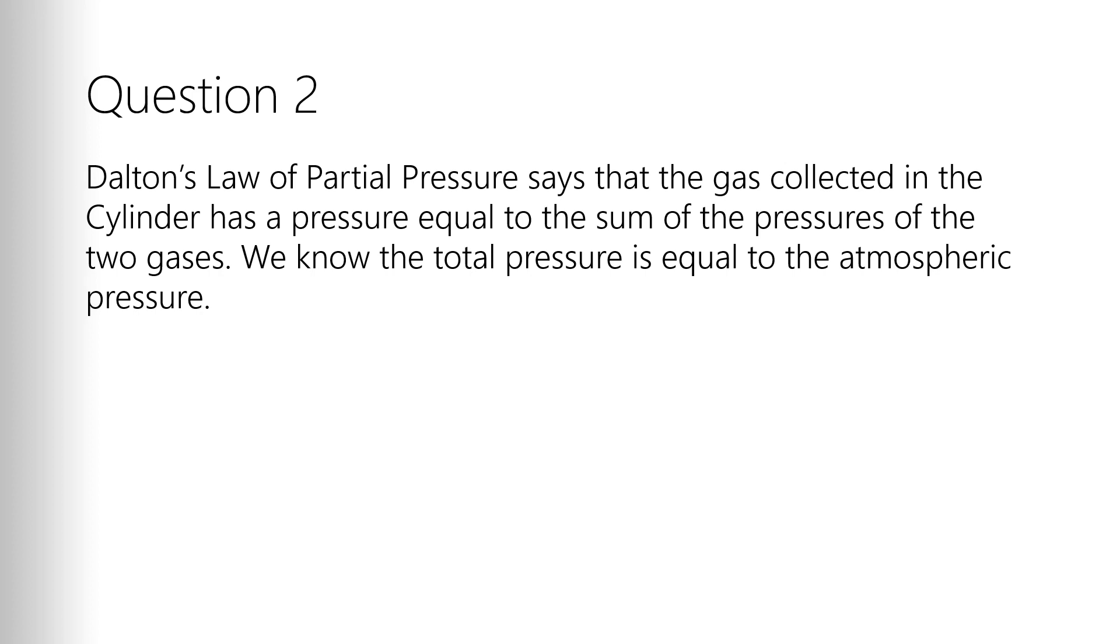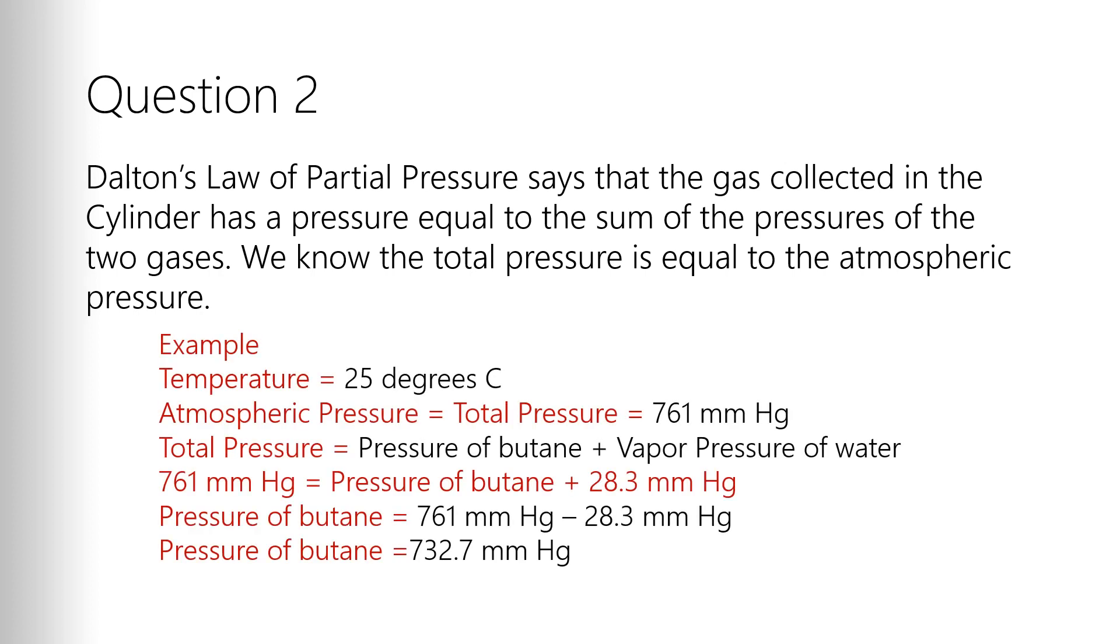As I described in the lab video, that gas that bubbles through there is not just butane. The stuff you collect is both butane and water vapor. So we've got to look at a bunch of different factors. Dalton's partial pressure law says that the total pressure is the pressure of butane plus the vapor pressure of the water. We know the total pressure in the system. This is the atmospheric pressure. This is on the JetNet page right under the temperature data. So we know the atmospheric pressure is 761 millimeters of mercury.